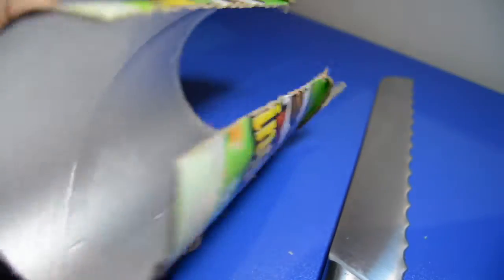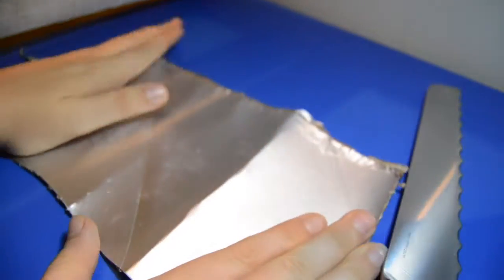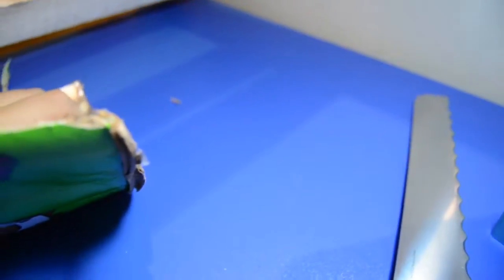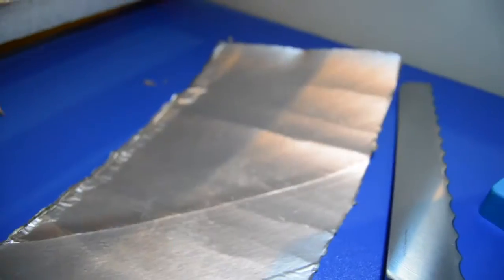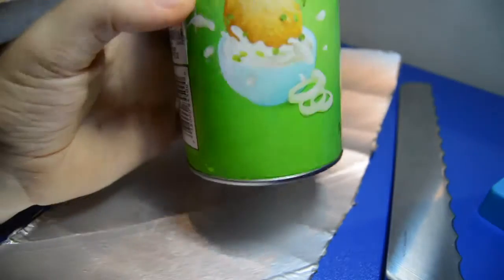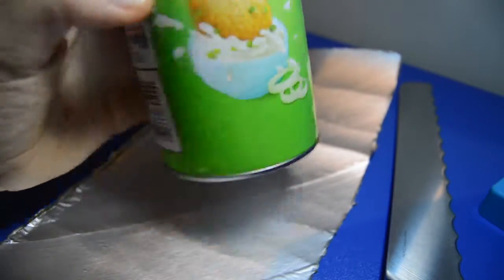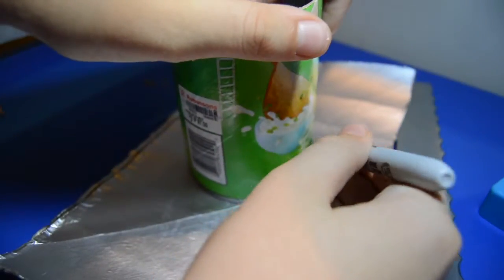Then, you take your Pringles that's cut and fold it out. Like this. Take your old Pringles container and draw around it.